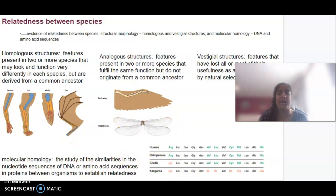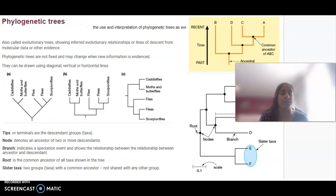This information enables us to create phylogenetic trees - visual representations of evolutionary relationships showing lines of descent. We use molecular data or other evidence to create these. They're not fixed and may change over time as we find more information.